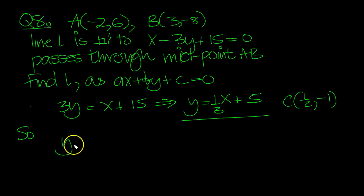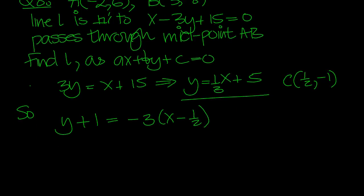So y minus minus 1 is equal to the gradient of minus 3, because the product is minus 1, x minus a half. That's the equation of the line.